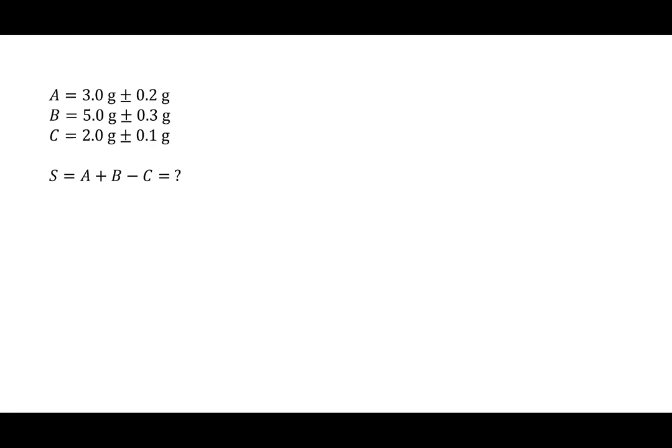Hopefully you're familiar with the plus or minus notation, denoting that this first part is the value or sometimes referred to as the measurement, plus or minus the uncertainty. In this case that's of course the absolute uncertainty, delta A. And so on and so forth for B, delta B, C, delta C.